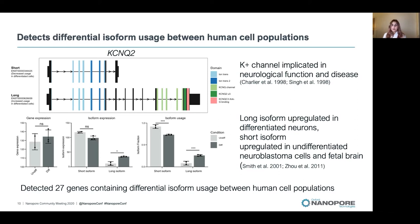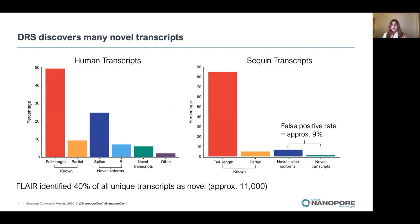Overall, we identified 27 genes showing differential isoform usage between our two human cell populations. We used the program FLARE to identify novel transcripts in our direct RNA data and found that 40% of all unique transcripts identified were classed as novel. Although this seems high, other studies have reported even higher numbers around 50 to 60%. Using our sequin controls — all of known sequence — we estimated a false positive rate of around 10%, suggesting our true number of novel transcripts may more realistically be around 30%.